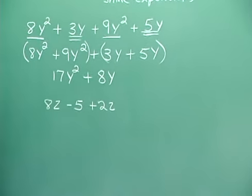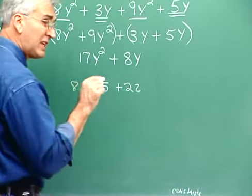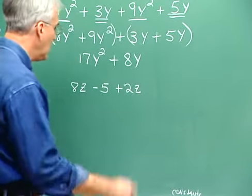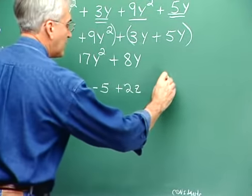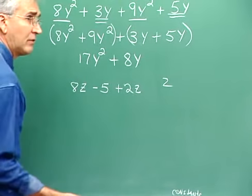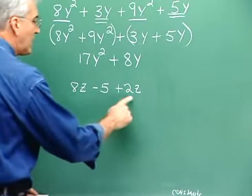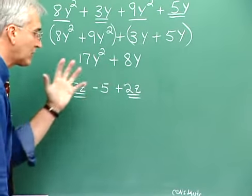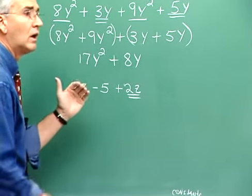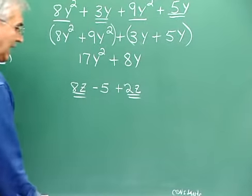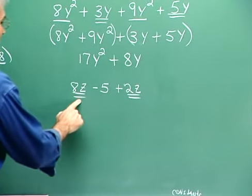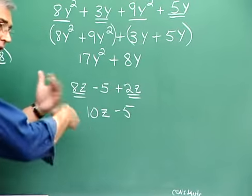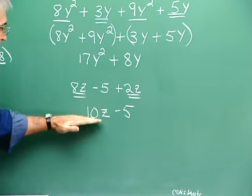In this one, identify like terms. By the way, the z letter is sometimes written with a little mark through it to identify it as distinct from a 2, to prevent that confusion. Anyway, we have 8z here and 2z here — these are like terms and can be brought together. The minus 5 is a constant with no like term counterpart. Constants are like terms with one another if there are two constants, but here there's only one. So we bring together 8z plus 2z: 8 and 2 is 10z, minus 5. This is the simplified version of that expression.